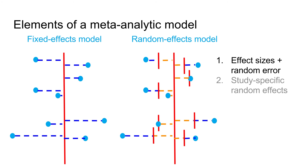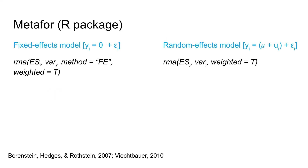Here is the visualization of the difference between the models. In random effects models, study-specific random effects and random error both contribute to the deviation of the effect measured in a specific study from the mean. The two types of models can be implemented with the metaphor package in R using these formulae.